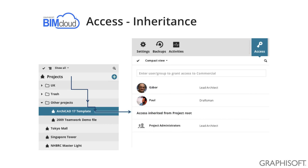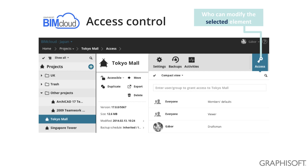The access setting is very similar — you can define access on higher levels. This access setting will also apply to lower level elements, and you can always extend it with additional users and roles. Every item on the BIMcloud has an access control panel. This panel describes who can do what with the selected element. In this case, the Tokyo Mall project is selected, and the access panel shows that Gabor has draftsman permissions for the Tokyo Mall project.